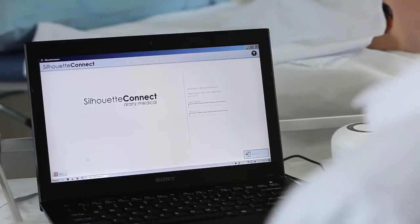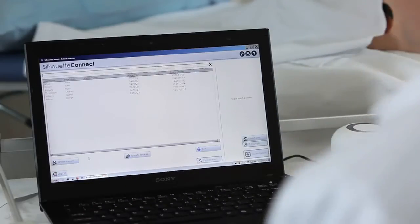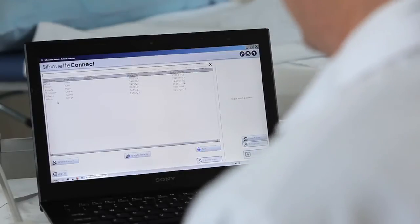The first thing to do is to log into Silhouette Connect using the username and password that you have been given. Once you have logged in, you see a list of patients that are currently under investigation. We'll select the first patient as it is the patient that we have here with us today.